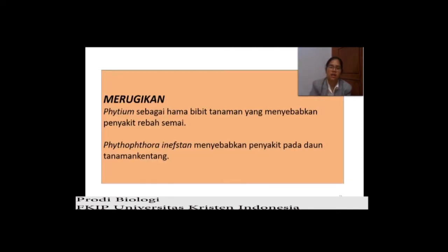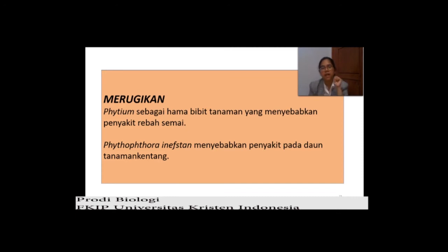Setelah kita pelajari tadi klasifikasi — ada empat, JABD: Zygomycota, Ascomycota, Basidiomycota, dan Deuteromycota — masing-masing punya ciri-ciri yang berbeda, ada yang sama. Kemudian setelah klasifikasi tadi kita sudah belajar tentang reproduksi, yang berbeda-beda. Yang tidak diketahui reproduksi seksualnya adalah Deuteromycota. Yang tiga sudah diketahui yaitu reproduksi dari Zygomycota, kemudian reproduksi dari Ascomycota, dan reproduksi dari Basidiomycota.